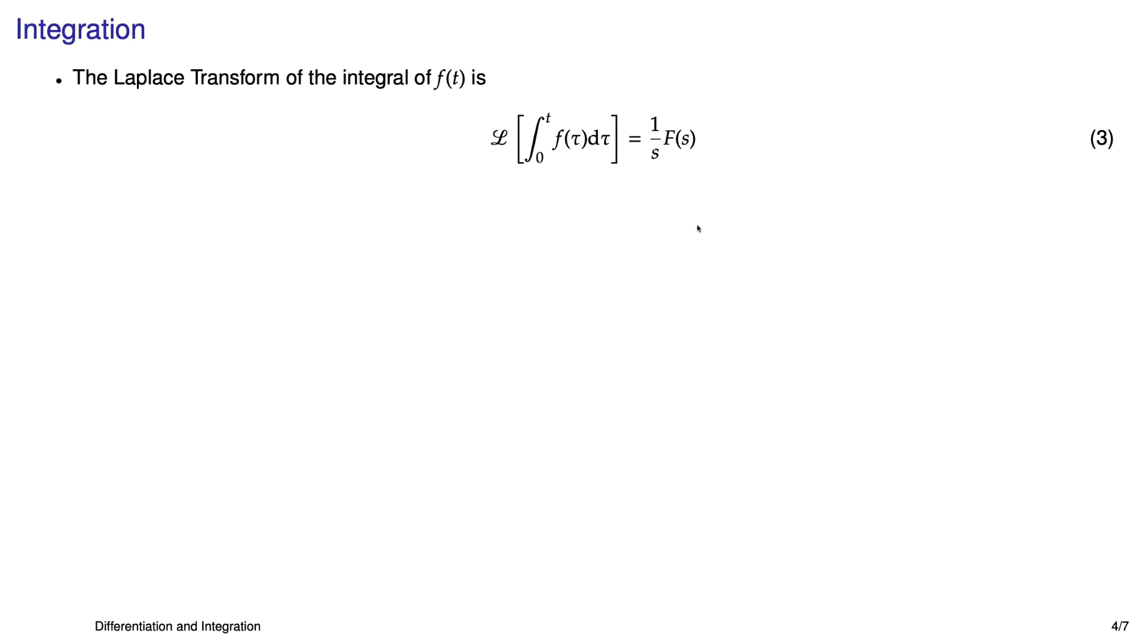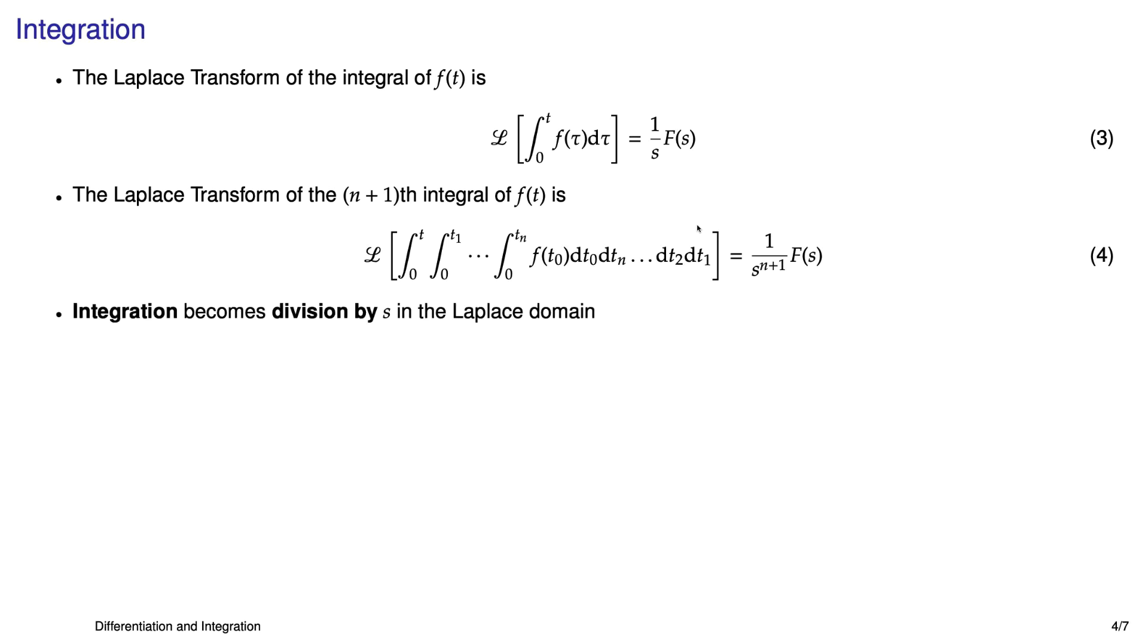And here's the integration property. The Laplace transform of the integral of f(t) is equal to the Laplace transform of f, so capital F, divided by s. This too gets a little bit exotic when you have multiple integrals. So here we have n plus 1 integrals, and so the Laplace transform of that quantity is just 1 over s to the n plus 1 times F(s). And the big takeaway here is that integration becomes division by s in the Laplace domain.